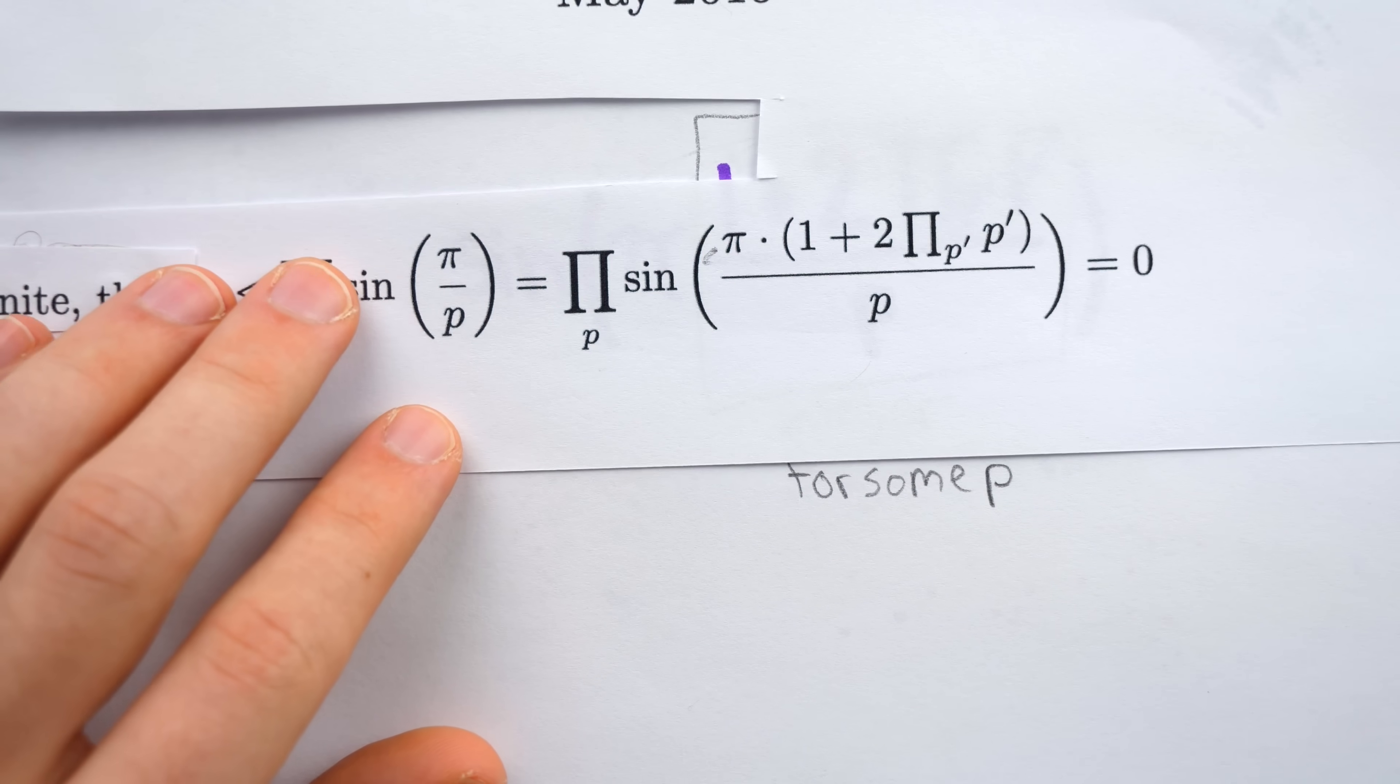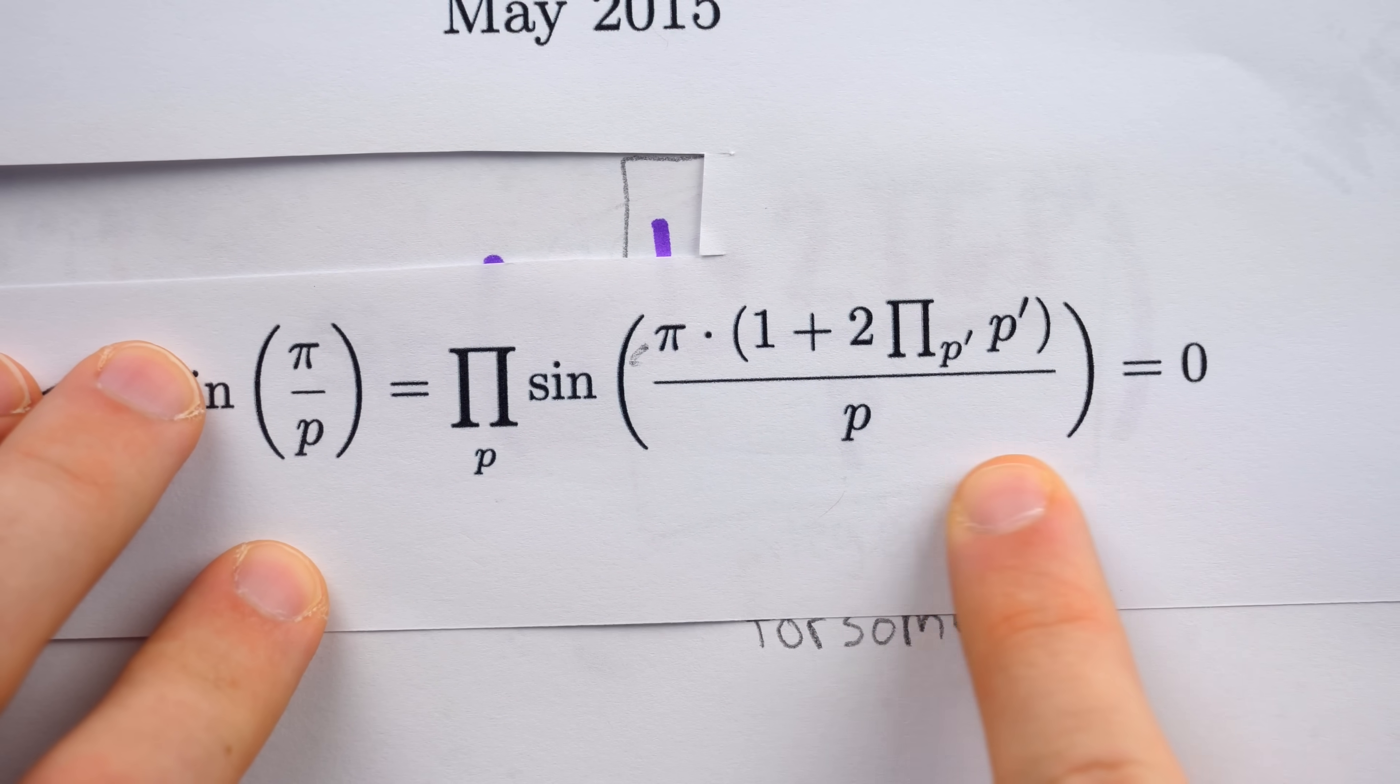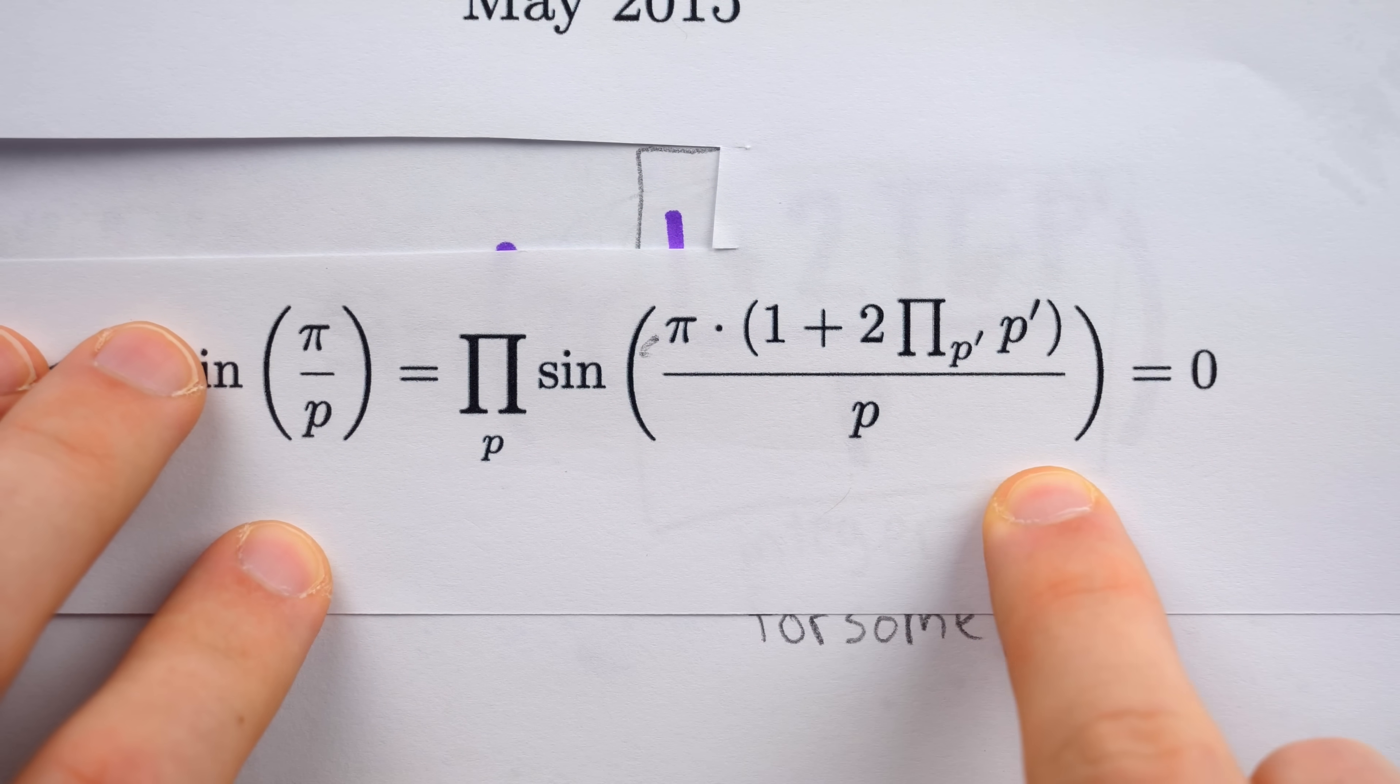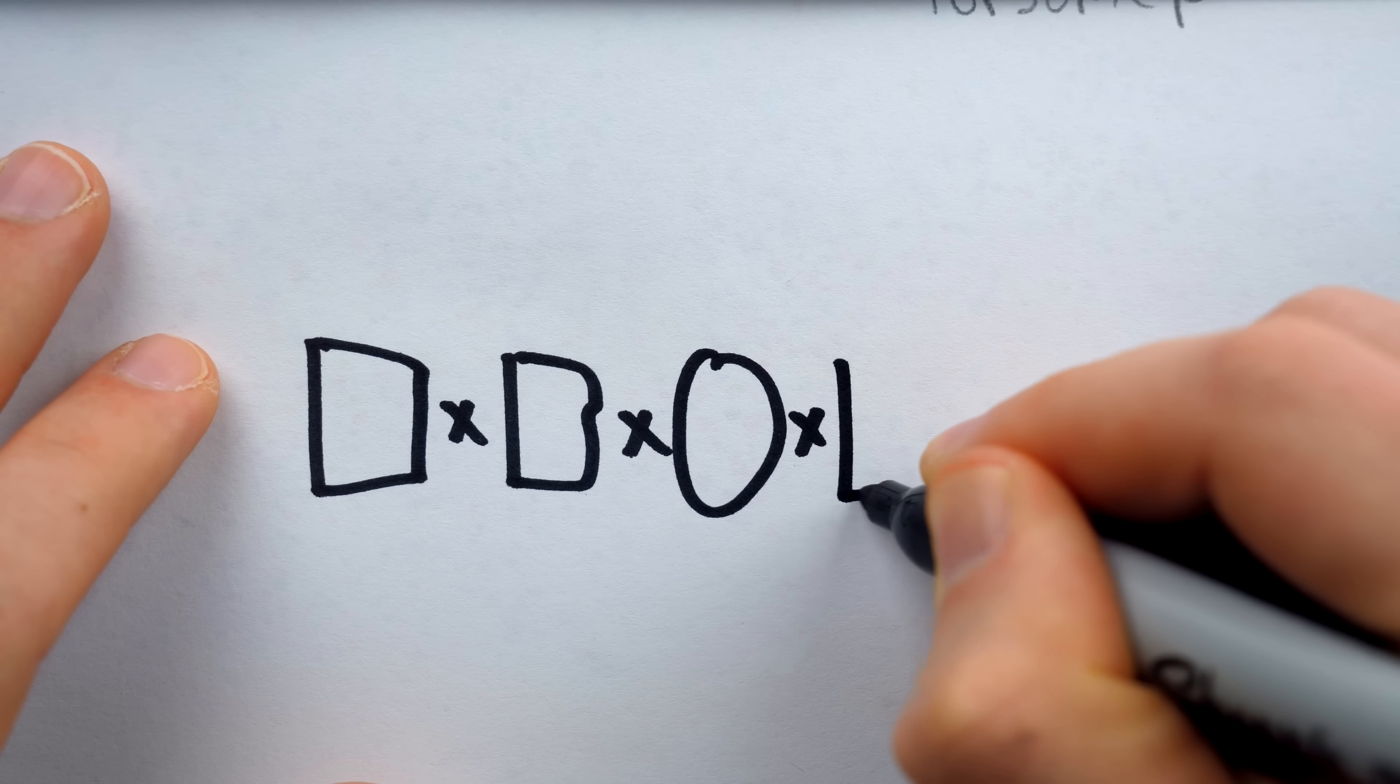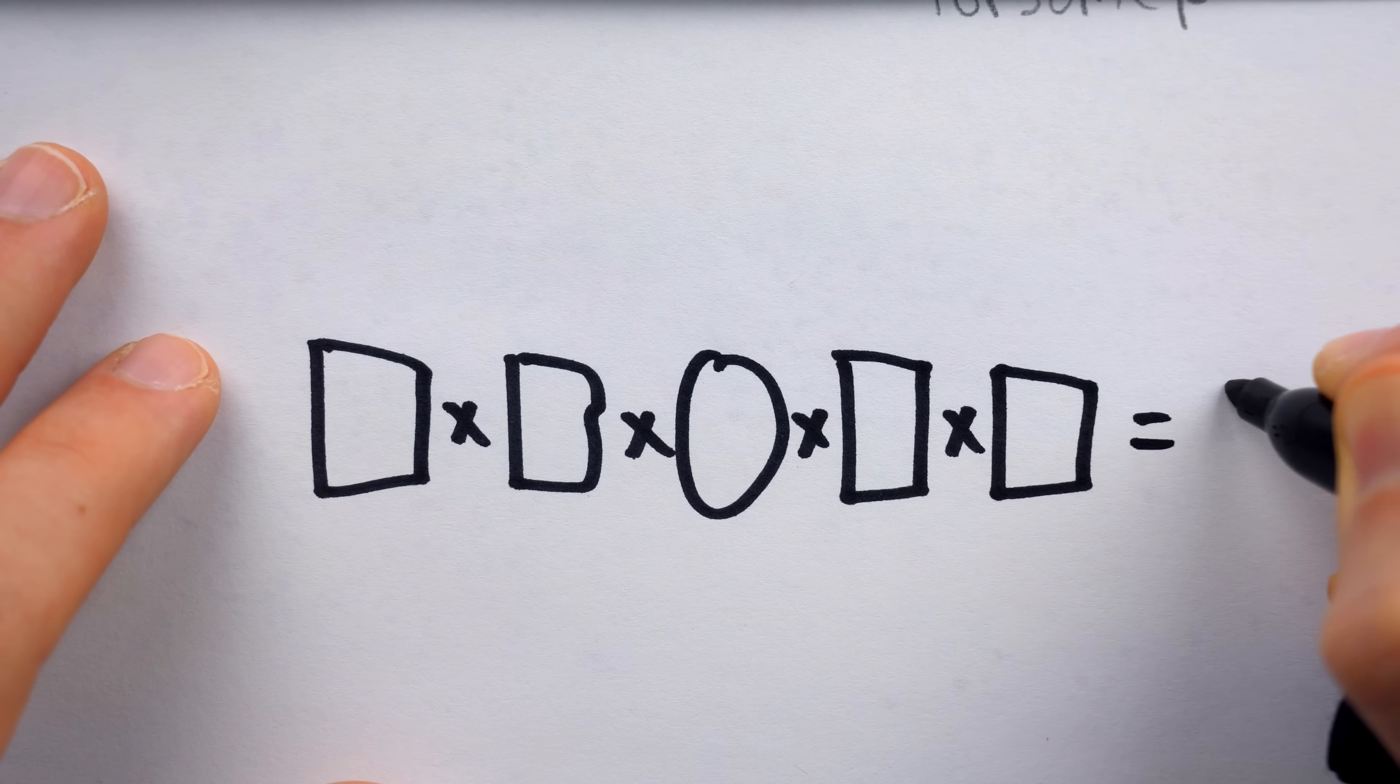Hence, at least one term in this product has to be zero. And if even one term in a big product is zero, then of course, that forces the whole thing to be zero.